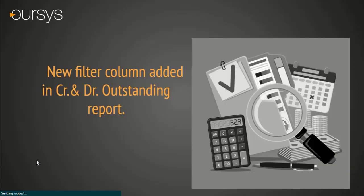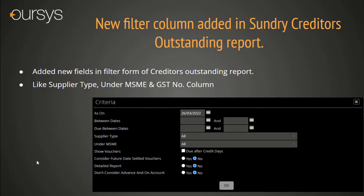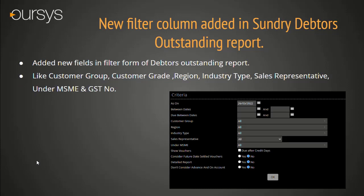New filter columns added in Creditor and Debtor Outstanding reports. In the Creditor Outstanding report, new filter options have been added like Supplier Type, Under MSME, and GST Number. Under the MSME filter, we can use it for creditors where payment must be made within 45 days. For Sundry Debtor Outstanding, new columns have also been added: Customer Group, Customer Grade, Region, Industry Type, Sales Representative, Under MSME, and GST Number. A column selection option is also given.